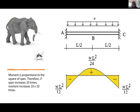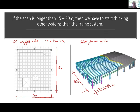If we increase span 10 times, the moment increases proportional to the square of the span — that is the core problem to struggle with.